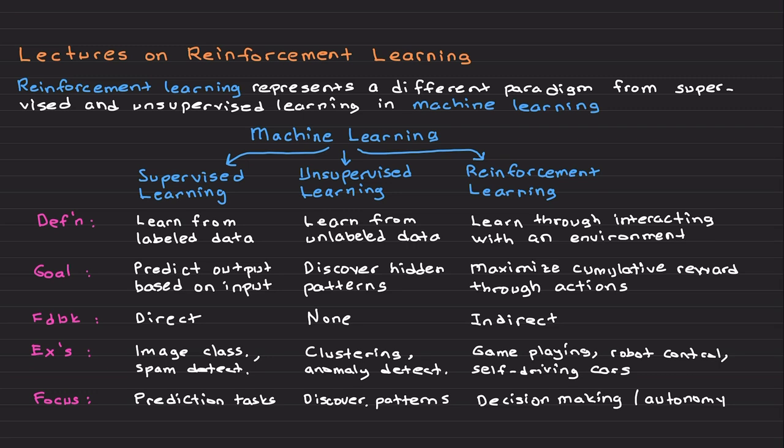In supervised learning, the learning algorithm is provided with a labeled dataset where each input is paired with a corresponding correct output, which is called a label. The goal is for the model to learn a mapping from inputs to outputs that generalizes well to new unseen data. For example, in image classification, the model is trained on labeled images to predict the correct category for new images.